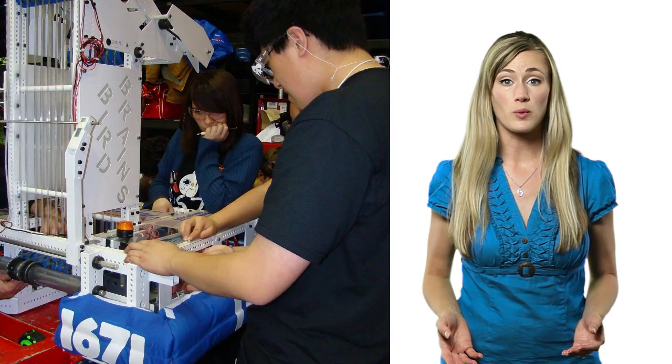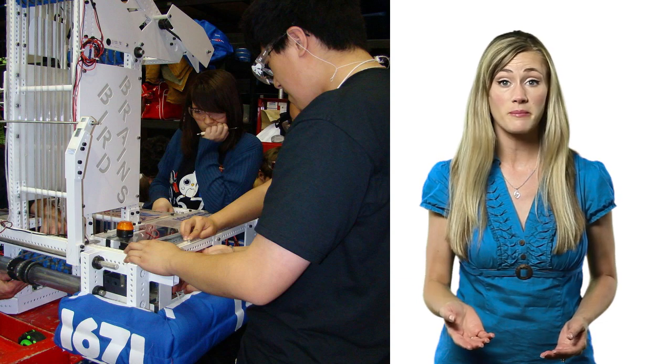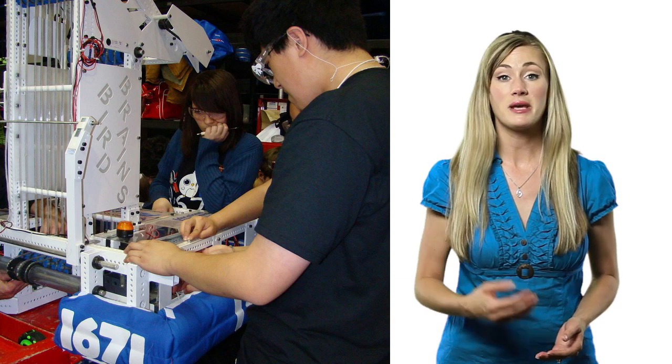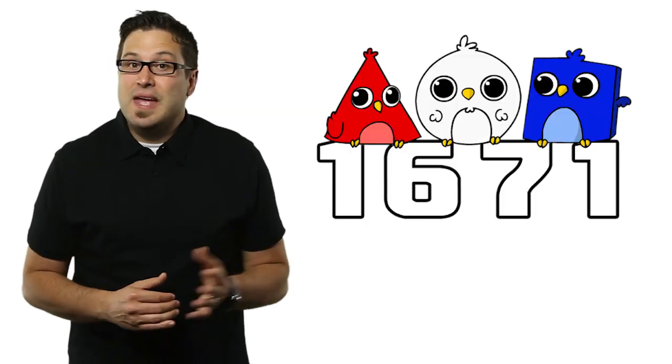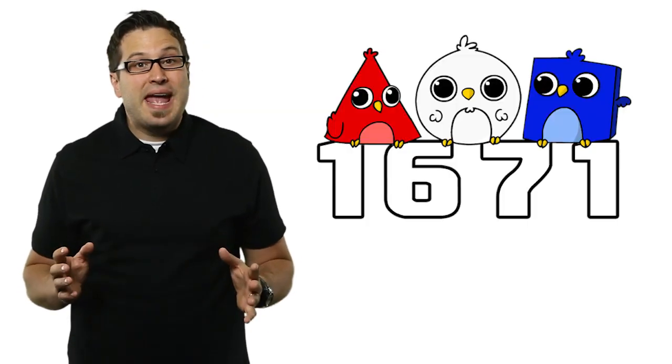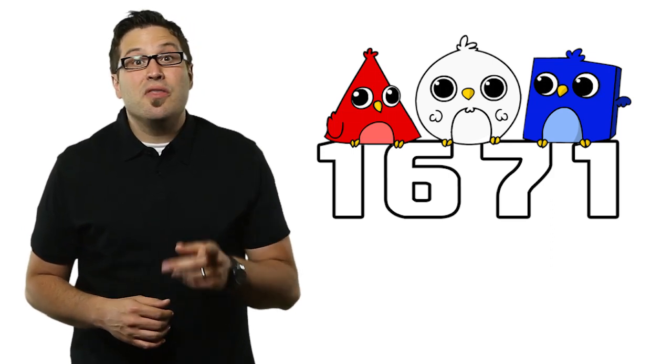Sounds simple enough, right? Well, that's not even close to the whole story. In addition to designing a robot in six weeks, each team has to raise funds, train members on manufacturing and CAD, and manage the robot's development project. We spoke with Evan Giarda and Eunice Kokor, members of the Buchanan Bird Brains, Team 1671, about designing their robot.